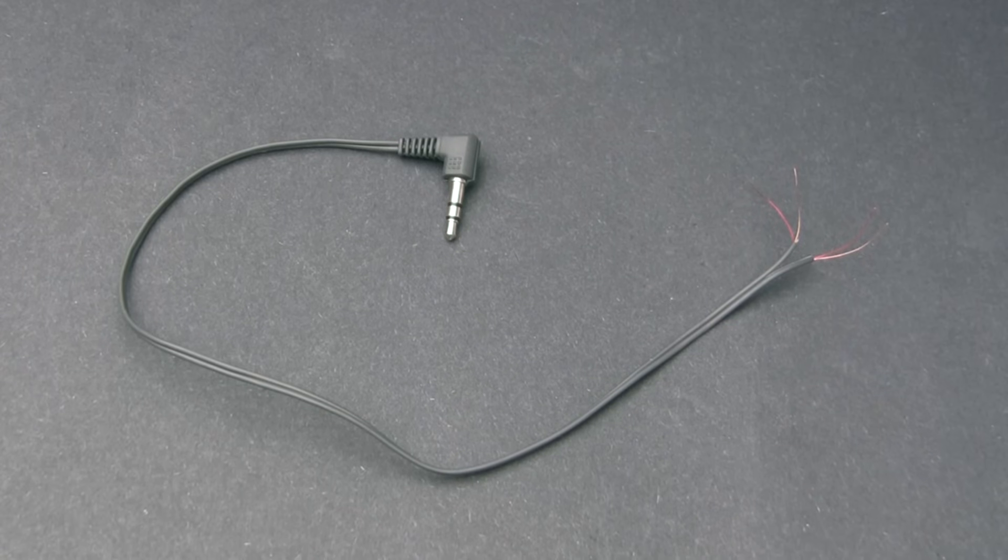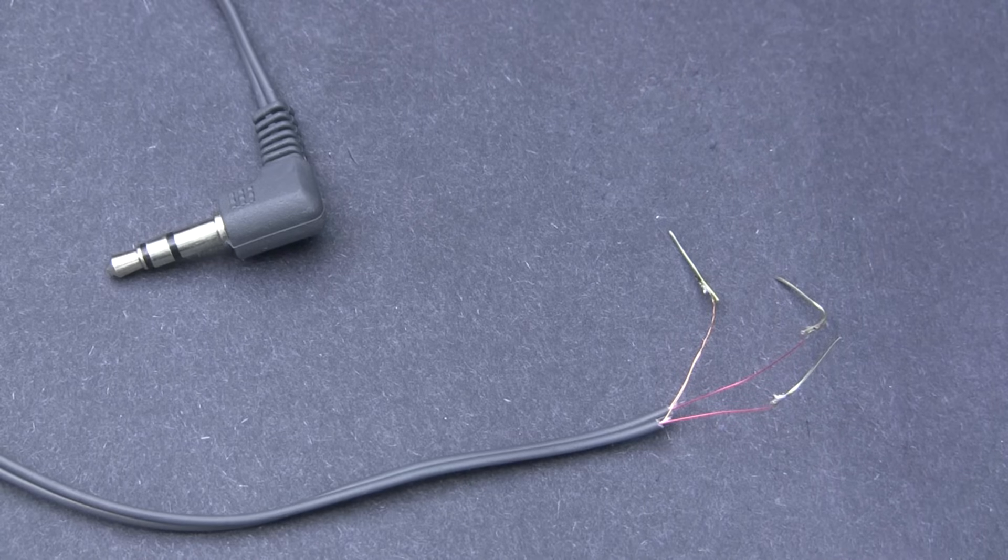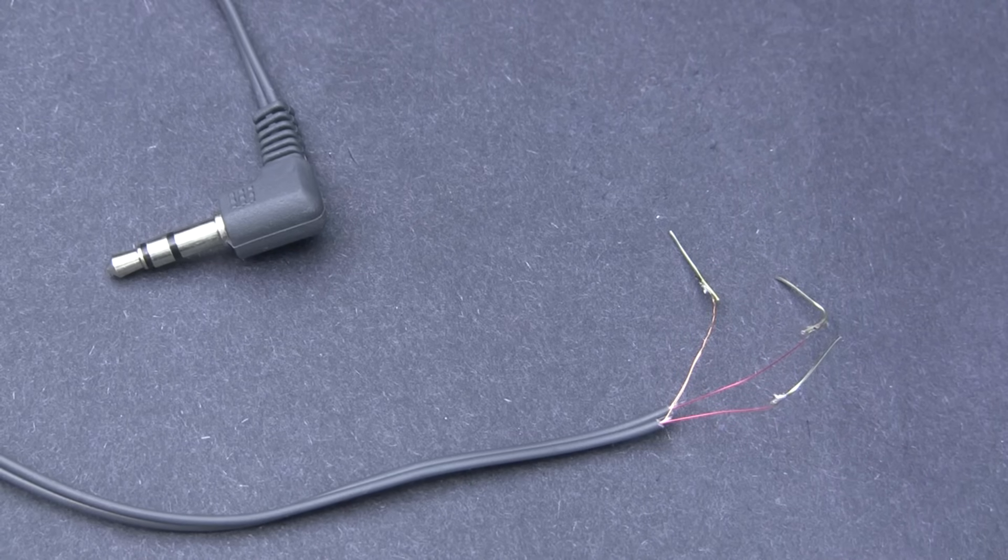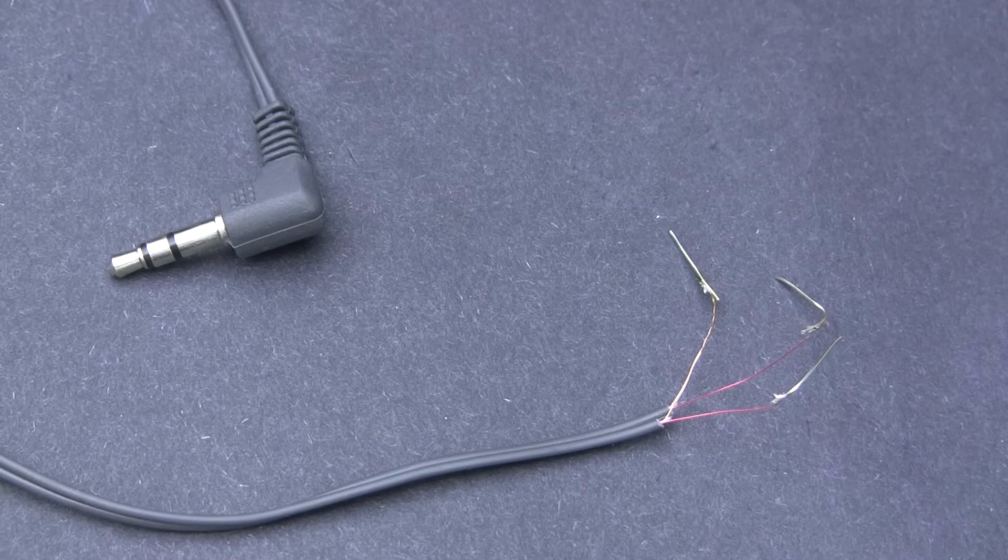After I was done being a stripper, I used some sandpaper to remove the insulation on the left and right signal wires. And I soldered on some thicker wire to make it easier to connect the cable to a breadboard. I also twisted the two ground wires together.